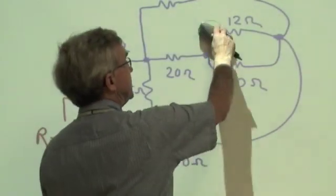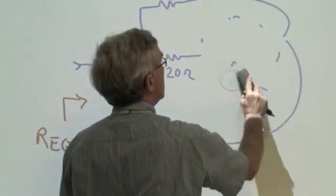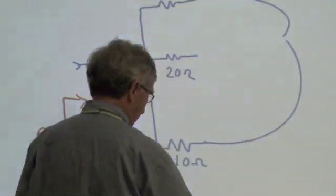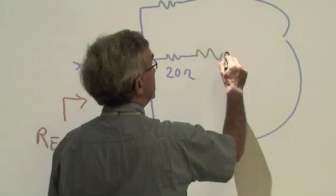So, we erase those two resistors, we replace them with one resistor between the two nodes, and the value of that is 10 ohms.